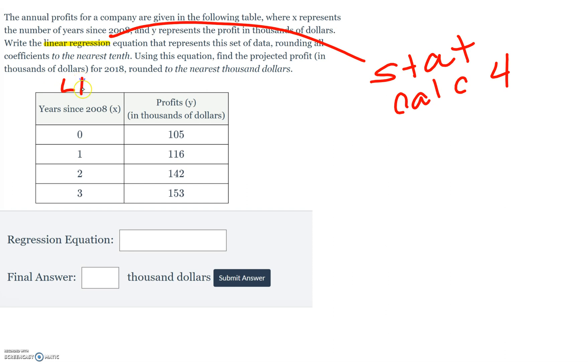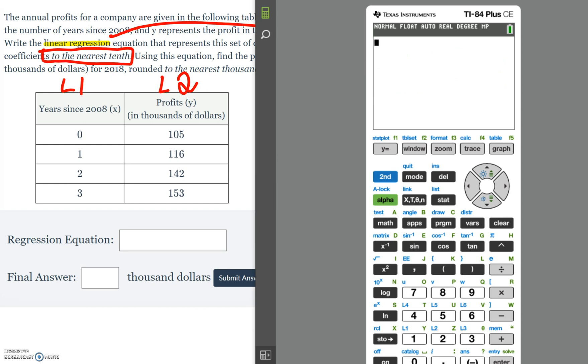We know that the x values, our L1, is the year since 2008, so 0 is 2008, 2009, 2010, 2011, and our L2 is our y value, which is the money in thousands of dollars. So since we need an equation that's rounded to the nearest tenth, we're going to go to our calculators and hit stat, edit, and then we're going to clear out our list, and we're going to put in our values.